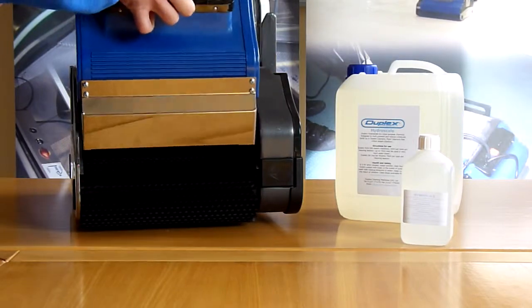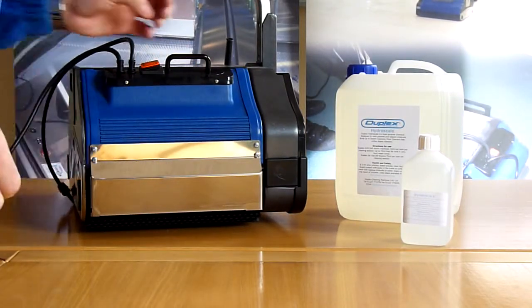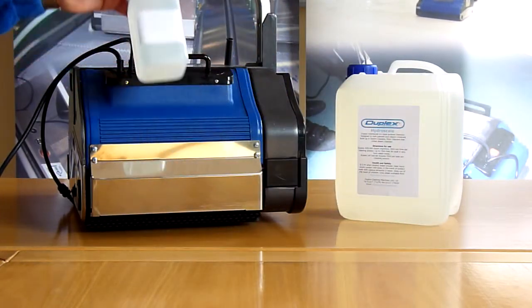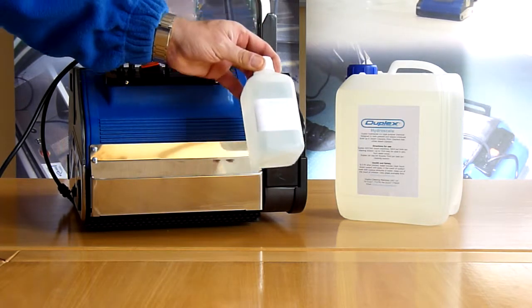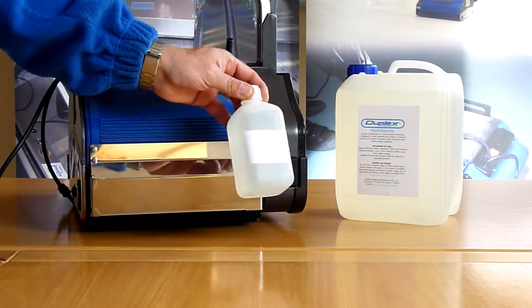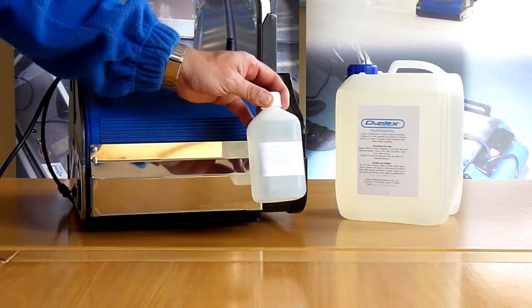Put the steam kit back on the machine. Pour some HydroScale into your tank, normally a 50-50 mix. So if you put 100ml in, you need to put 100ml of water.